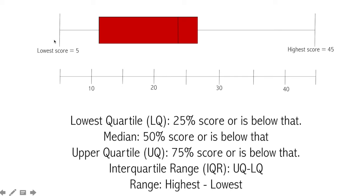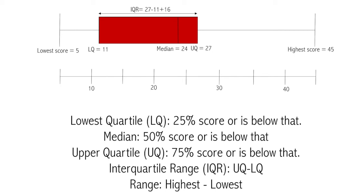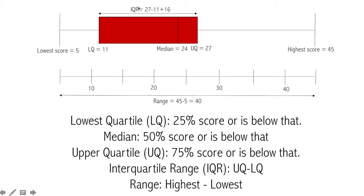The range is just the highest score minus the lowest score. The lower quartile is always represented by the start of the box and is approximately 11. The end of the box represents the upper quartile, and the line in the middle represents the median, which is about 24; the upper quartile is about 27. This means 25% of candidates scored below 11, 50% scored less than 24, and 75% scored less than 27 out of 50. The interquartile range is 27 − 11 = 16, and the range is 45 − 5 = 40.